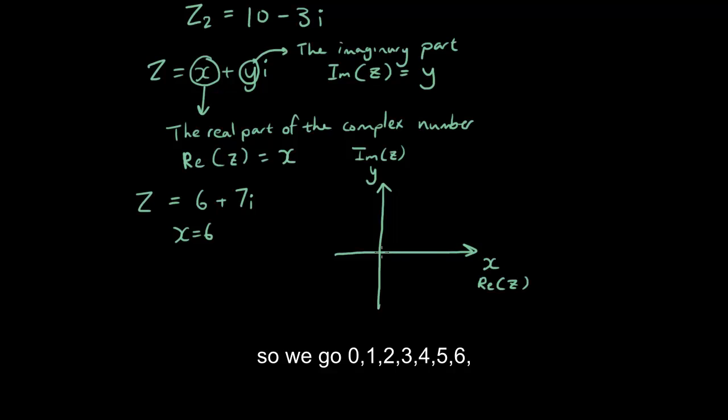z has an x value of 6. So we go 0, 1, 2, 3, 4, 5, 6 and it has a y value of 7. So, 1, 2, 3, 4, 5, 6, 7 and this number here, this dot here represents z.